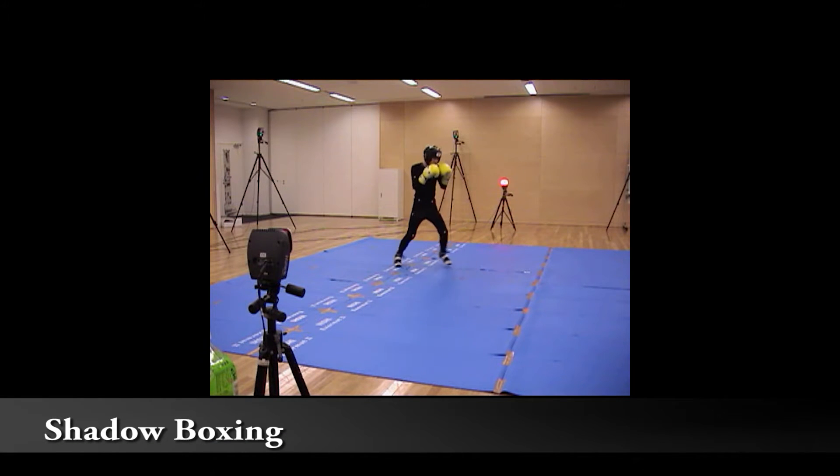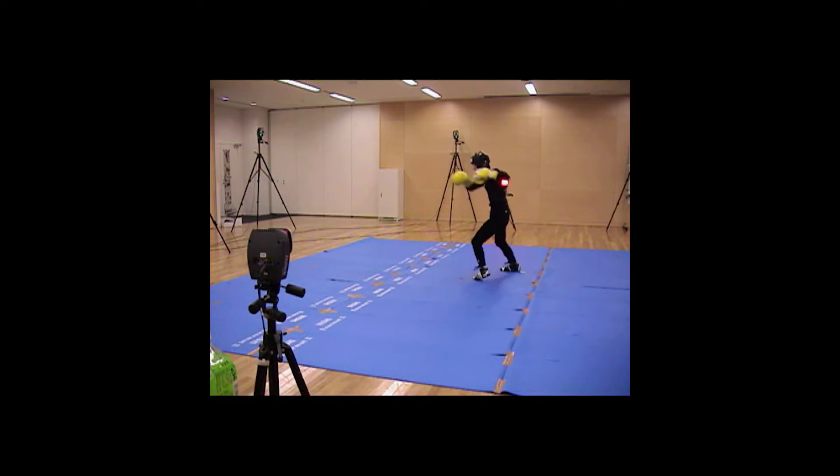We first capture a shadow boxing motion from the boxers, in which they perform boxing moves such as attacks and transitions with an imaginary opponent.